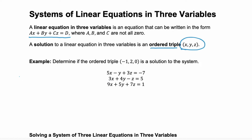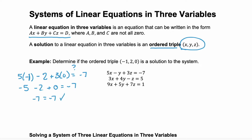We'll take the first equation. We'll substitute in negative one for x, two for y, and zero for z, and we want to see if this is actually equal to negative seven. Well, negative five minus two plus zero — is that equal to negative seven? The left side is negative seven, so yes, it works.